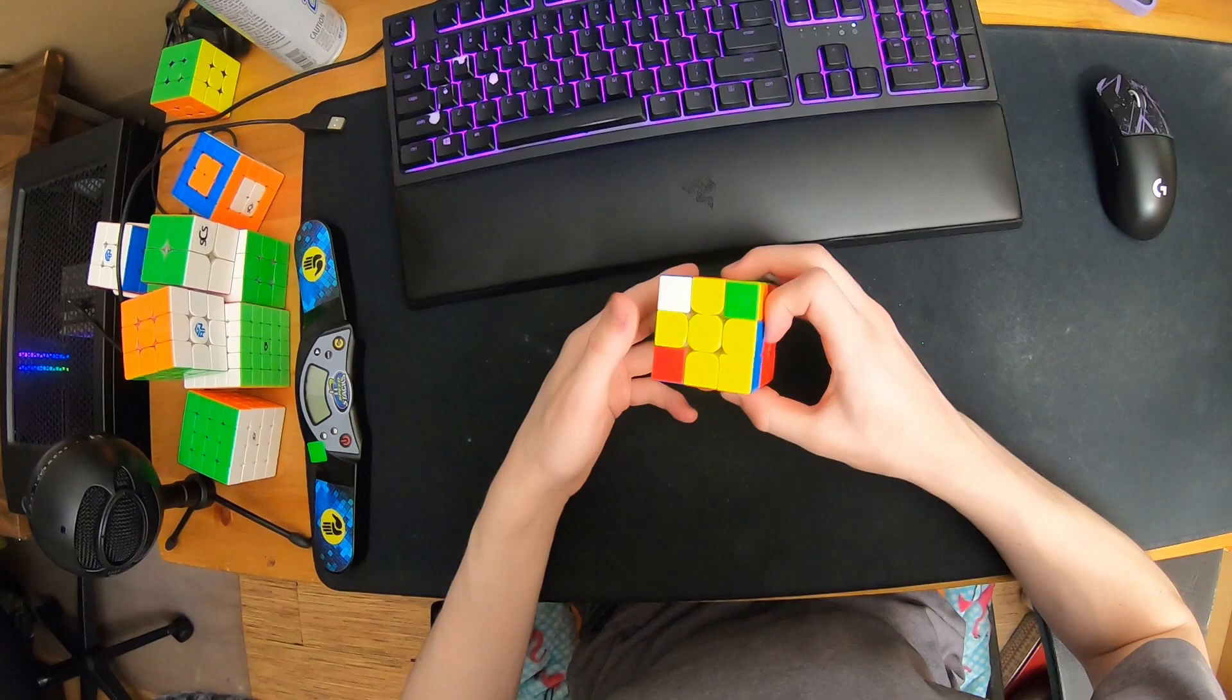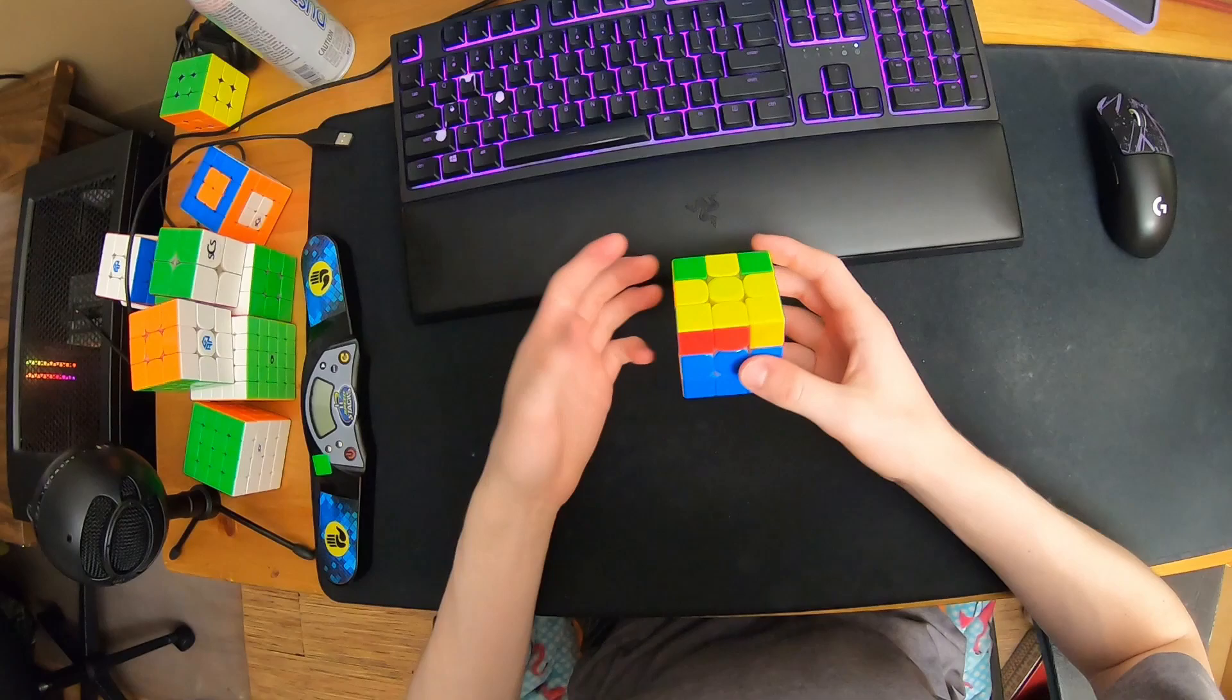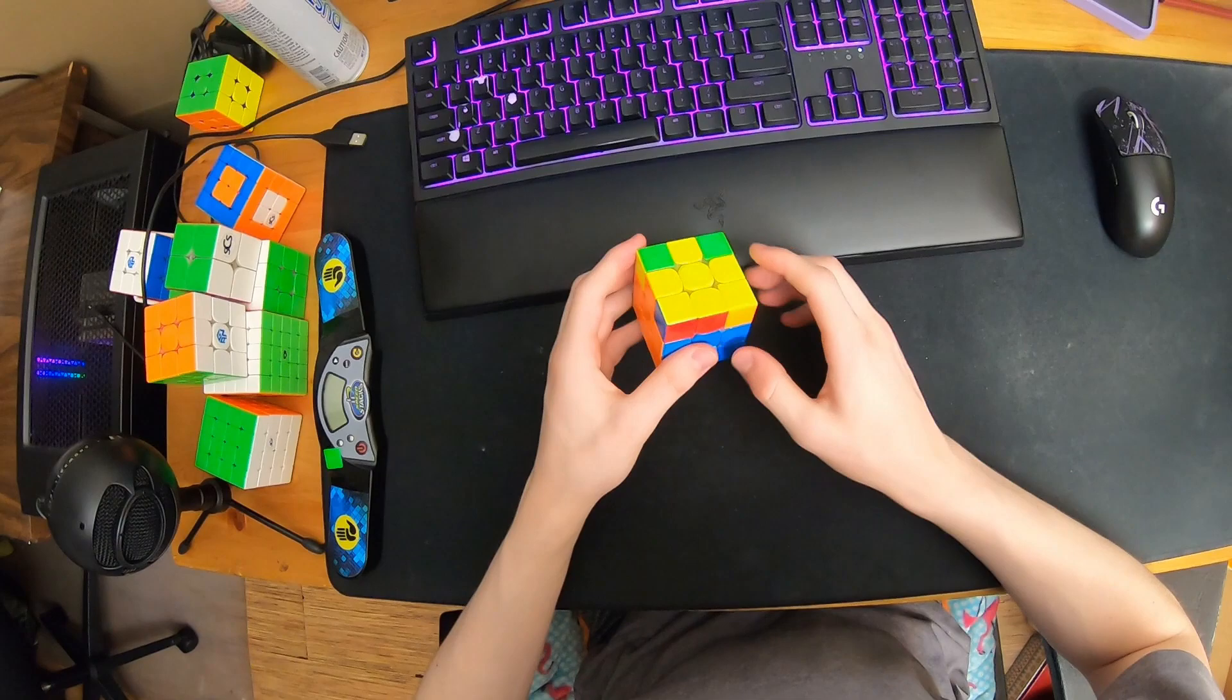Then I rotated and saw these two. For the OLL I do a different algorithm—most people do like this, but I do like U prime and then this.